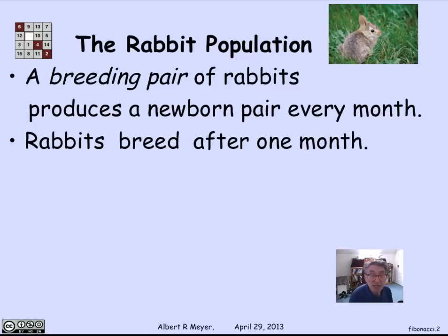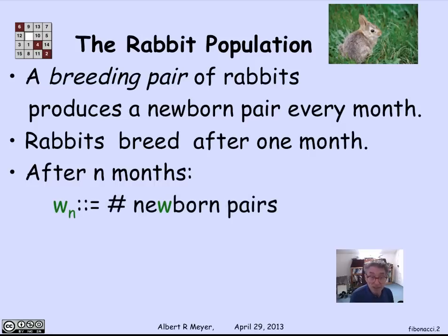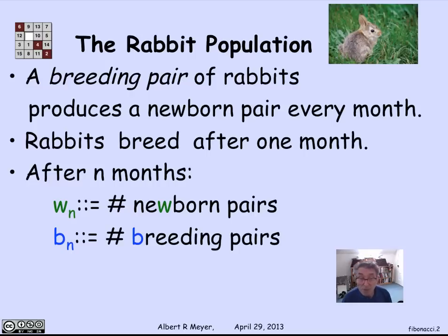The question then is, how does the rabbit population grow? We're interested in how many rabbit pairs we have after n months. The way we're going to figure that out is we're going to account simultaneously the number of newborn pairs, call that W sub n, and the number of breeding pairs, B sub n, that we have after n months have gone by.